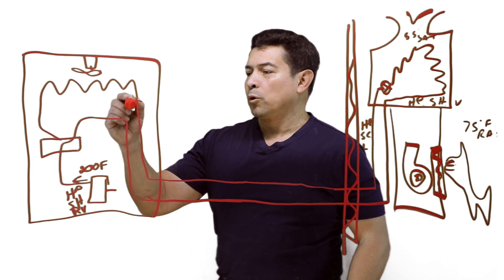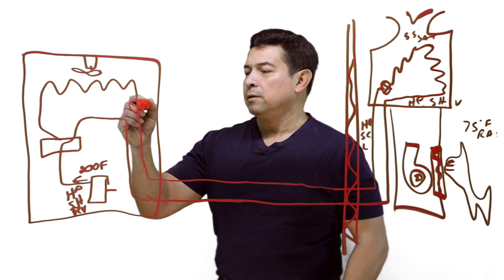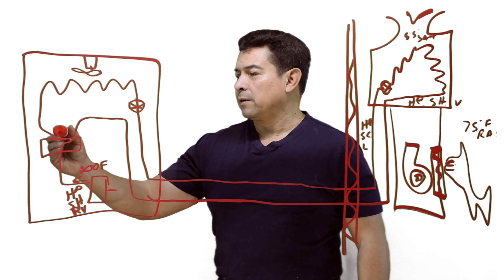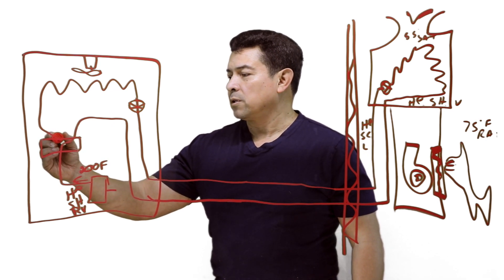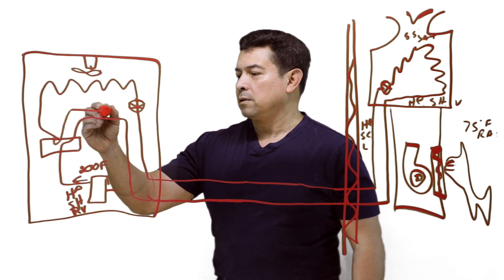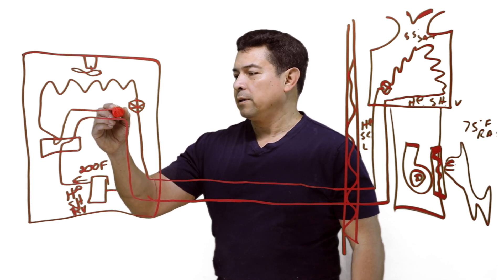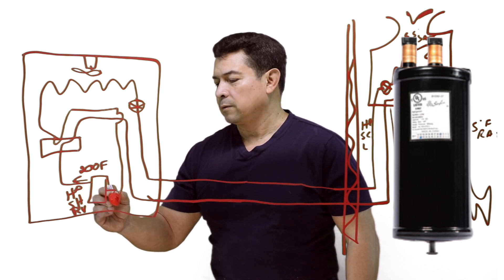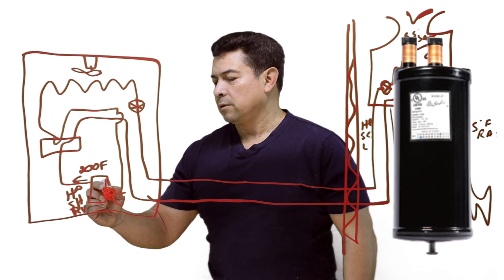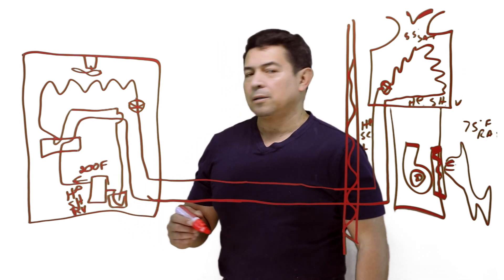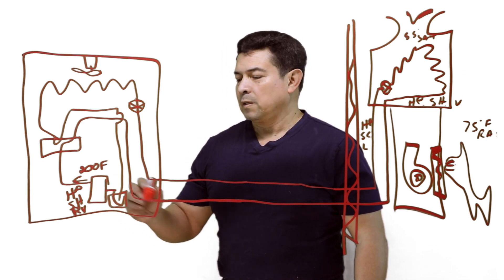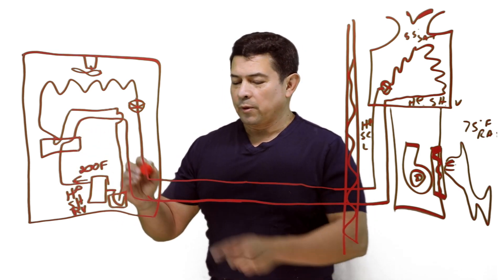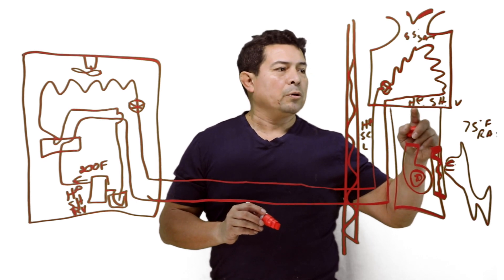And on this side, we're going to need a metering device right here. This metering device creates a pressure drop so that now we can absorb heat from the outside. This is going to be rerouted like this, and then it's going to come down right into what we call the accumulator. The accumulator is going to make sure that no liquid gets back to the compressor. It comes to the compressor, gets compressed, and then high-pressure, superheated vapor comes this way, goes to the indoor coil.